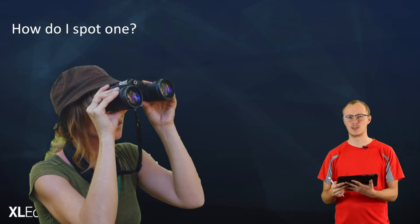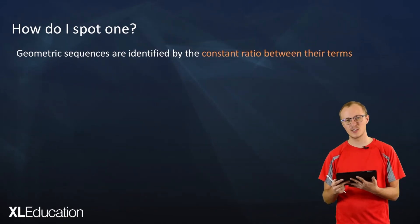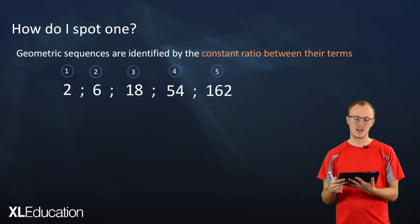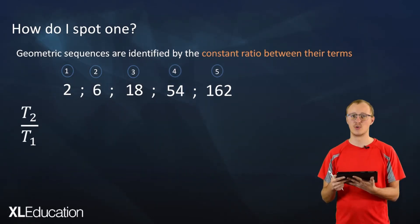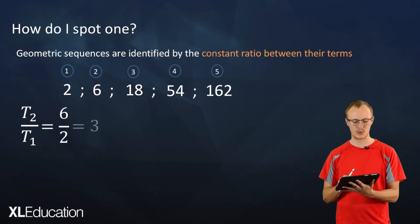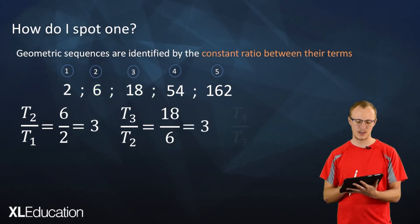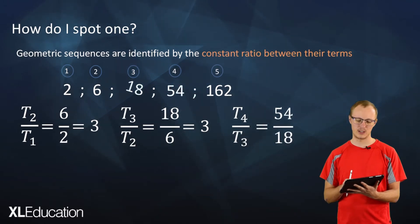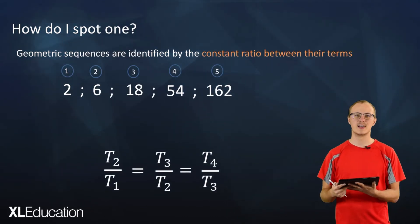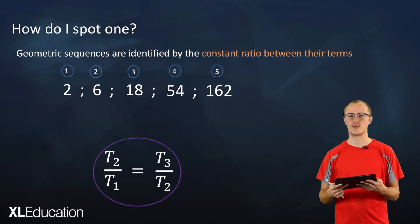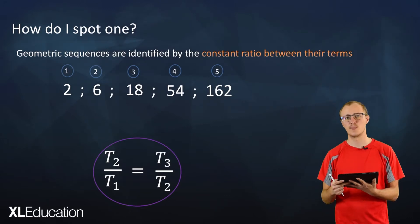How do you spot a geometric sequence? Well, luckily you're not going to need binoculars, because geometric sequences are identified by the constant ratio between their terms. So let's look at the example we just created. If we take term 2 divided by term 1, we get 6 divided by 2 which equals 3. Term 3 divided by term 2 is 18 divided by 6, which equals 3. And term 4 divided by term 3, 54 divided by 18, again equals 3. So the ratio between one term and the next is always going to be equal. To prove something is a geometric sequence, all you've got to show is that term 2 divided by term 1 is equal to term 3 divided by term 2.